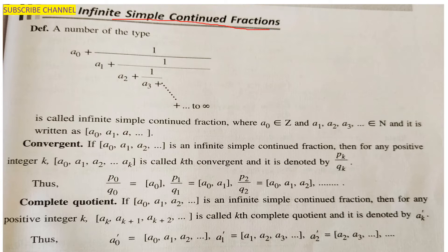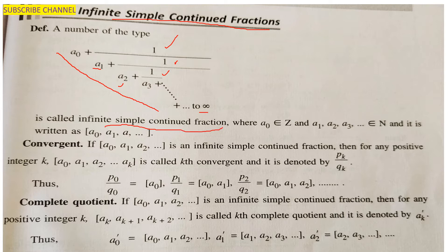Any infinite simple continued fraction can be written in the form a₀ plus 1 upon a₁ plus 1 upon a₂ plus 1 upon a₃, and so on. This is an infinite simple continued fraction — as we defined in the previous lecture about finite simple continued fractions, but here it goes to infinity. Here a₀ is an integer and a₁, a₂, ... are natural numbers.